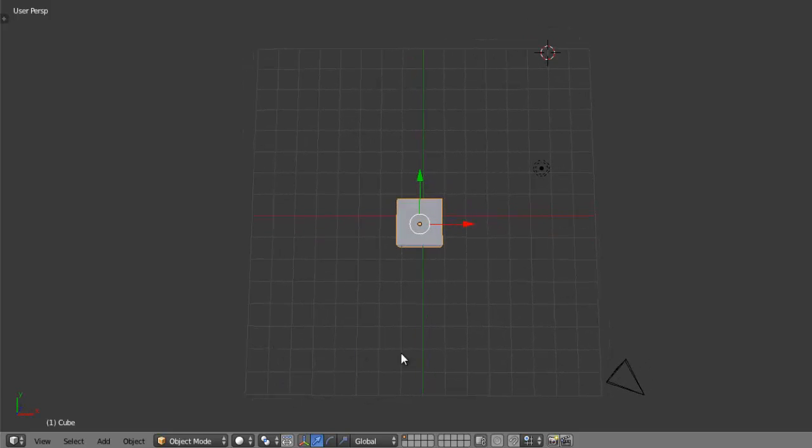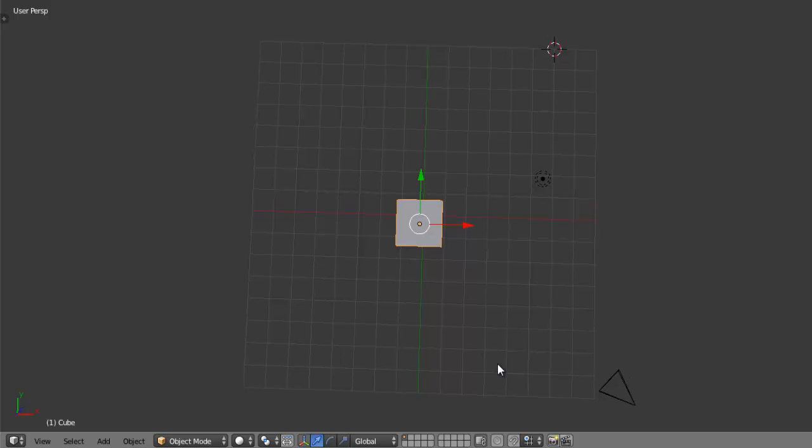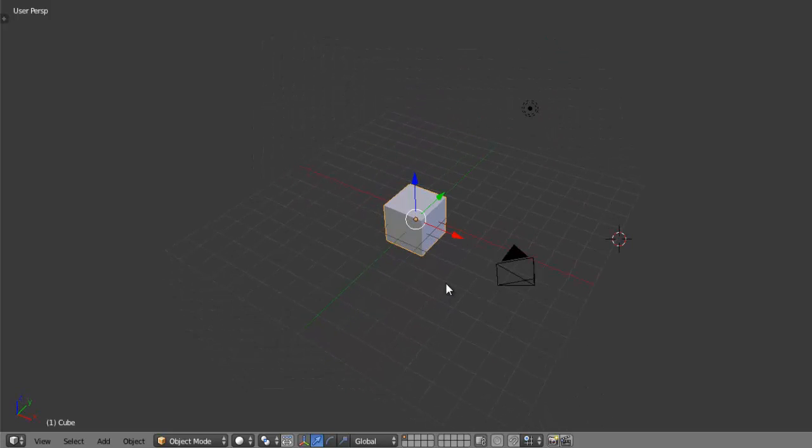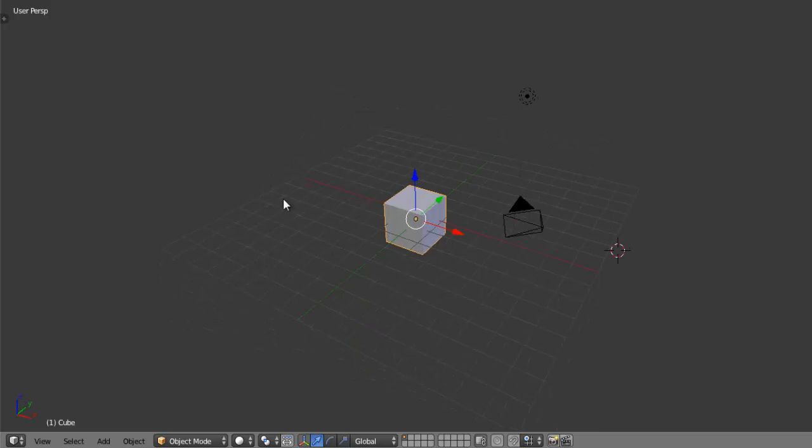So the moment this becomes 3D is when I change the view to about here. And we can see that there is a blue arrow pointing upwards and that's the z-axis. So we have the x-axis, the y-axis and then the z-axis is pointing up.